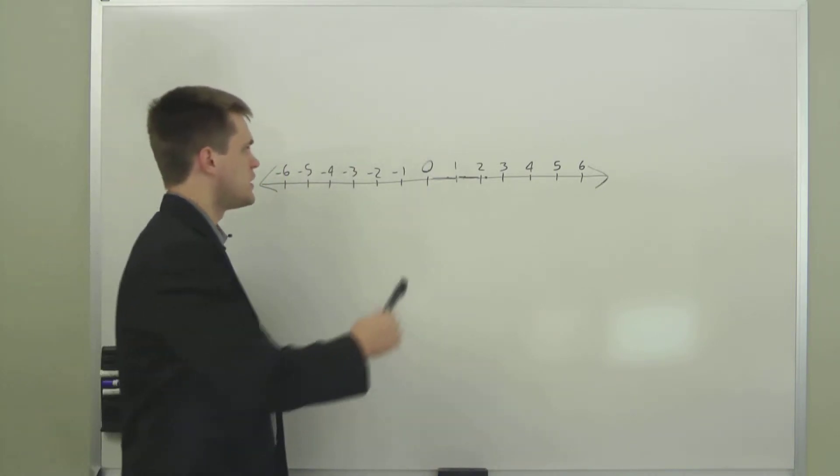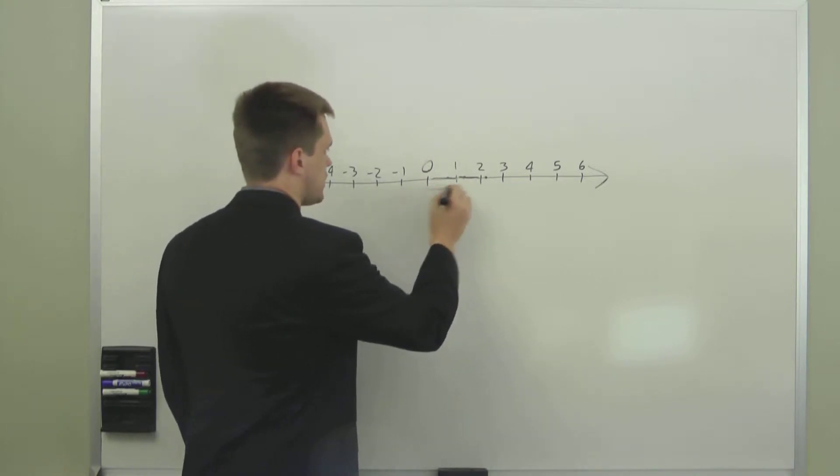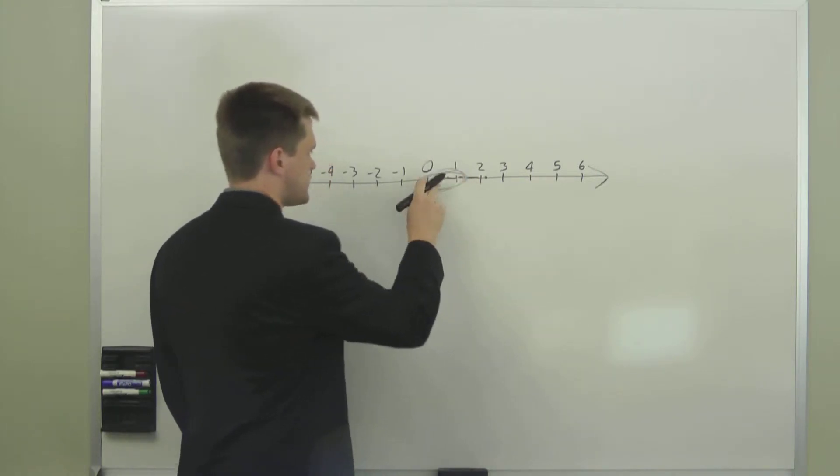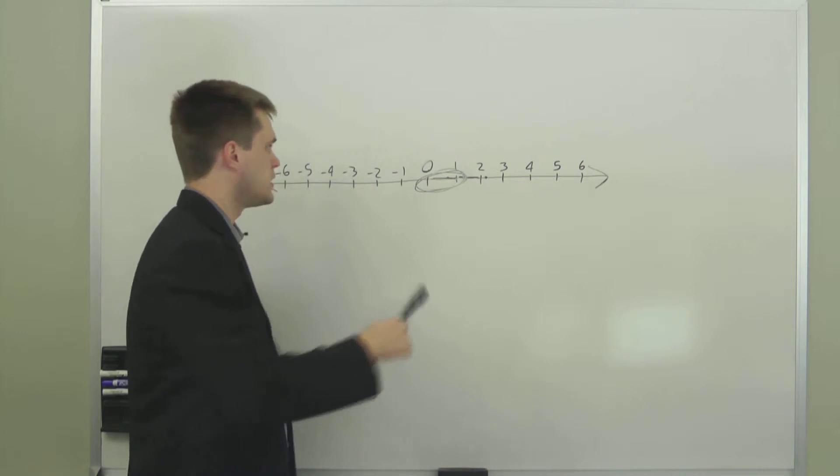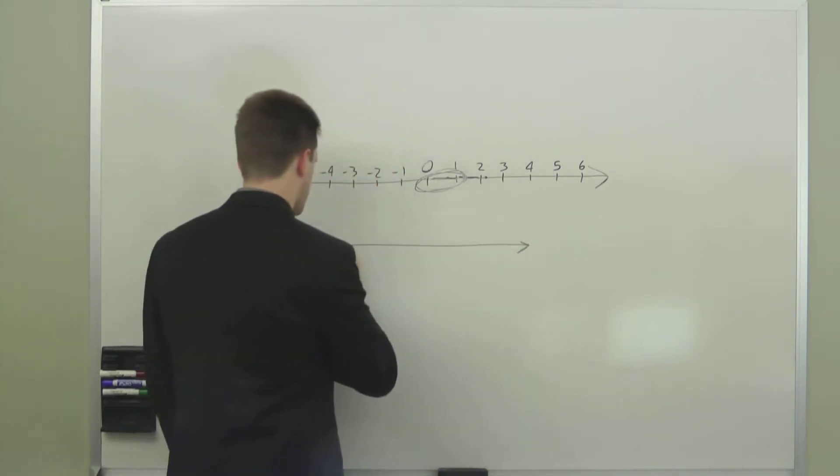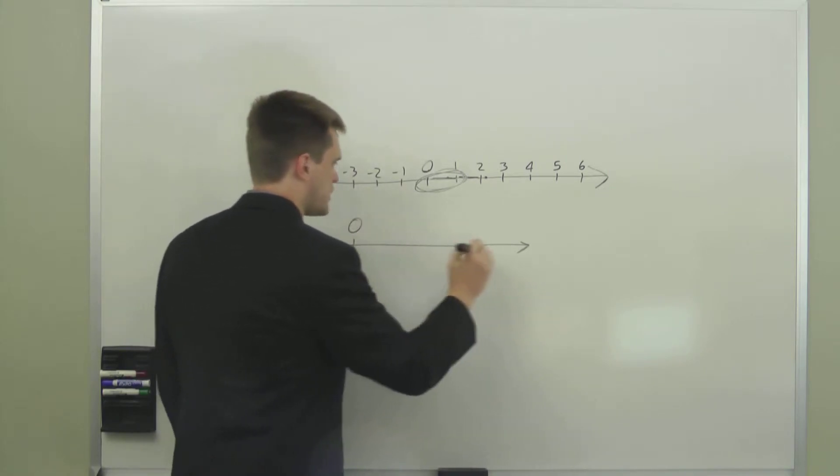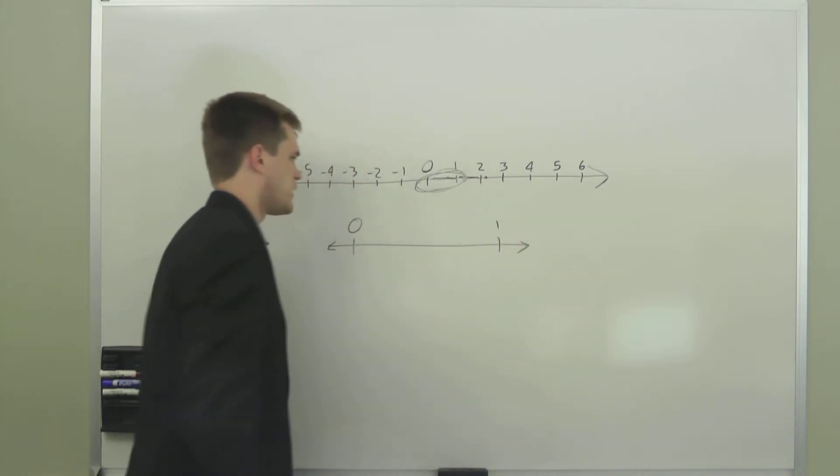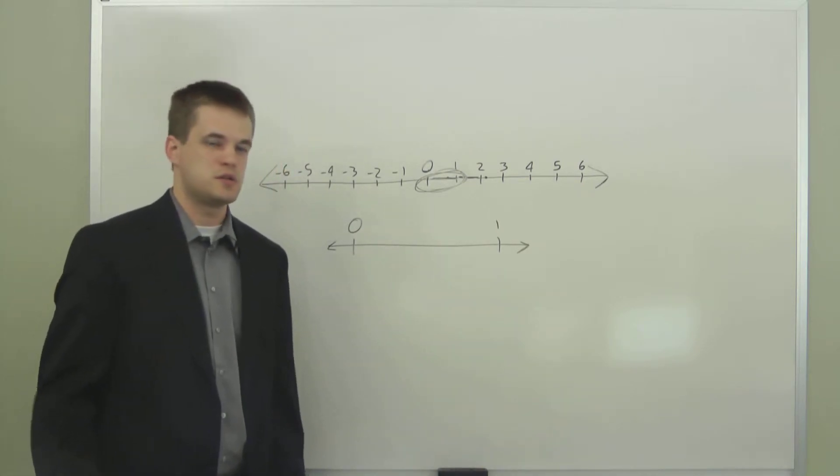To demonstrate this, I'm just going to enlarge essentially this section of the number line right here. This section of the number line is now going to be represented right here. We have zero over here and one over here. We have this massive space in between where there are no integers.